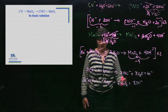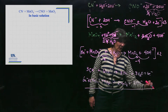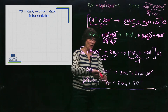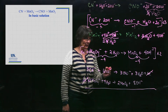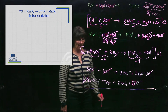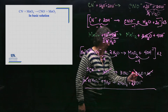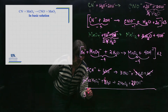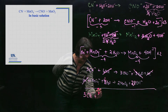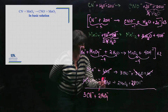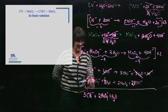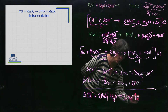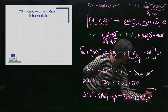Adding the two half-reactions together: cancel six electrons on each side. On the left I have six OH⁻ and on the right eight OH⁻, so six cancel leaving two OH⁻ on the right. I have four waters on one side and three on the other, so three cancel leaving one water on the left. The final overall reaction is: 3 CN⁻ + 2 MnO₄⁻ + H₂O → 3 CNO⁻ + 2 MnO₂ + 2 OH⁻.